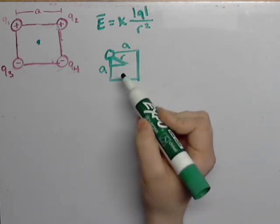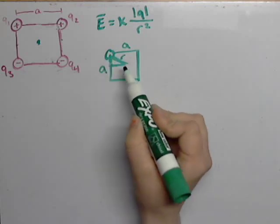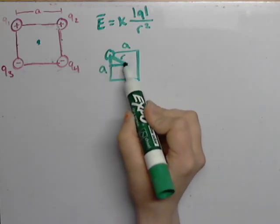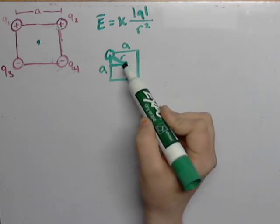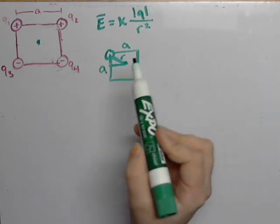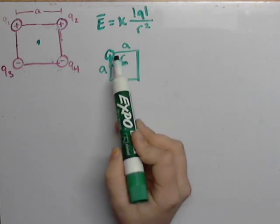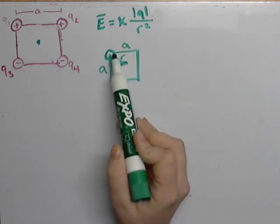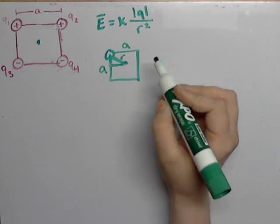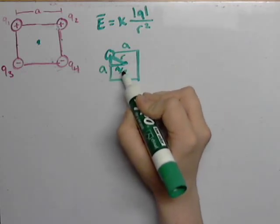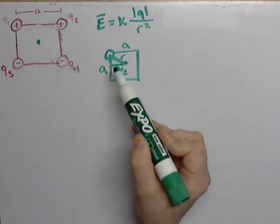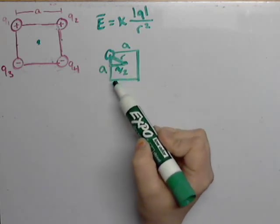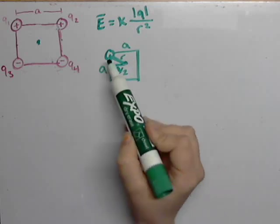In order to figure out what R is, we need to know what this length is and what this length is. This is easy since the point is in the very center of the square. That means that this length is half of this length, which is A over 2. That also means that this length is half of this entire length, which means this length is also A over 2.